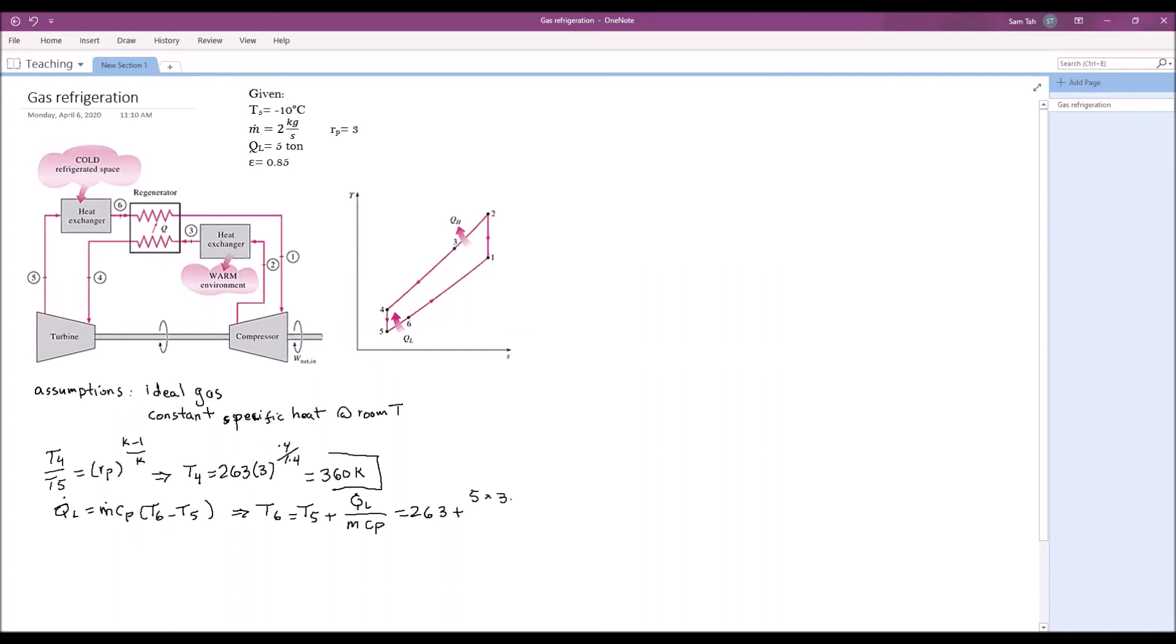Which equals 263 plus 5 tons. Conversion is 3.517. That converts cooling load to kilowatts. So that gives us mass flow rate 2 and Cp of air at room temperature 1.005 kJ per kilogram per kelvin. That gives us T6 of 271.7 kelvin.